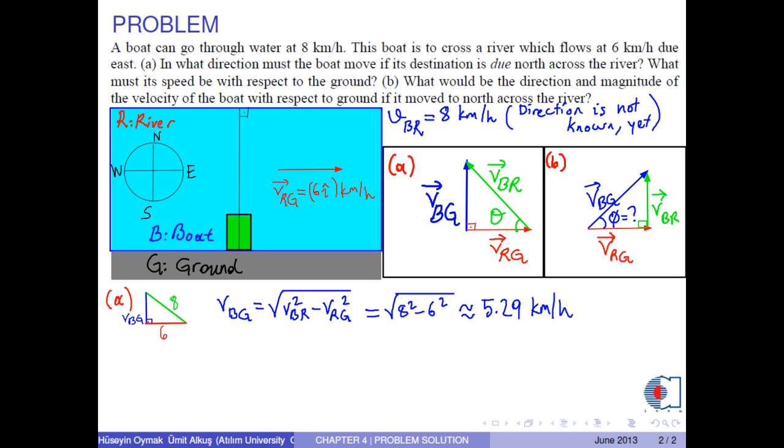This is the speed of the boat with respect to the ground, and the direction is found by this formula with the result approximately 41.4 degrees, which shows the direction of north of west.